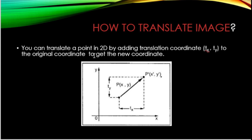You can translate a point in 2D by adding translation coordinates tx and ty to the original coordinates to get new coordinates. In this figure we can see we have original coordinates x and y.